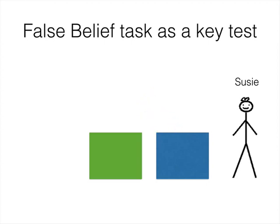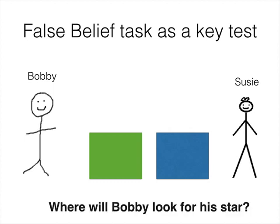After this change of location, Bobby comes back and wants to play with his toy. The child is asked, where will Bobby look for his toy? Children who understand that Bobby could hold a false belief will say that he will look in the green box, where he last saw his toy, whereas children who do not have this understanding will say that he'll look in the blue box, failing to appreciate Bobby's false belief.